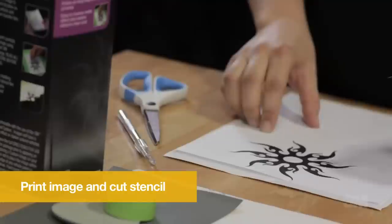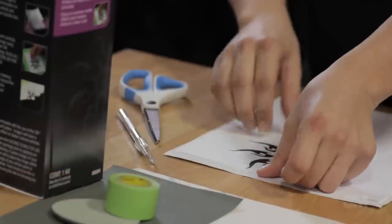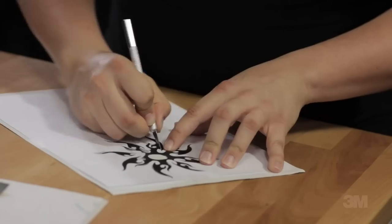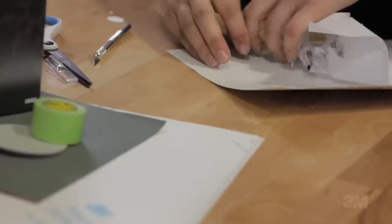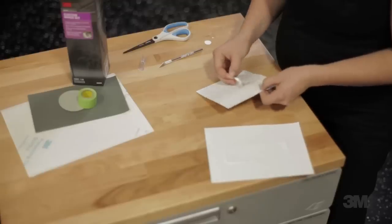Create or print your image of choice and tape it to the white, non-printed side of the stencil film and trace with a hobby knife. Then, carefully remove the portions of stencil film that make up your image. You should be left with the inverse of the image you want to create.